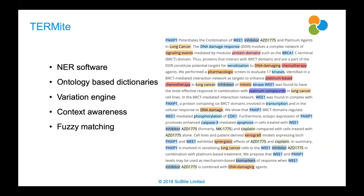We also have some notion of ambiguity. There are a lot of gene names where it may be a gene name, an acronym, or just a word. We use context awareness to figure out whether it is the entity we're looking for. Because all of our dictionaries are manually curated, curators can specify whether a term is ambiguous, which allows Termite to look at the context around that word to figure out whether it is actually what we're looking for. Finally, there's fuzzy matching, which catches common spelling mistakes.